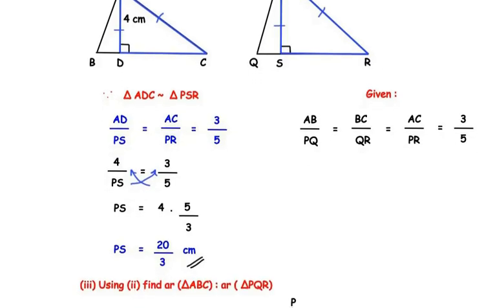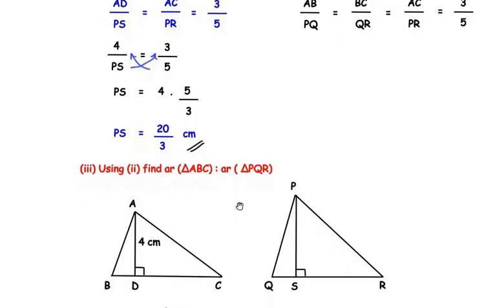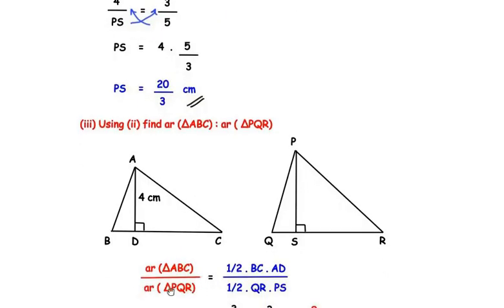Now moving on to the third sub-question: find the ratio of area of triangle ABC to area of triangle PQR. We know that the area of a triangle is 1 over 2 times base times height. So area of triangle ABC over area of triangle PQR equals one-half times BC times AD, divided by one-half times QR times PS. The one-half cancels, giving us BC over QR times AD over PS.